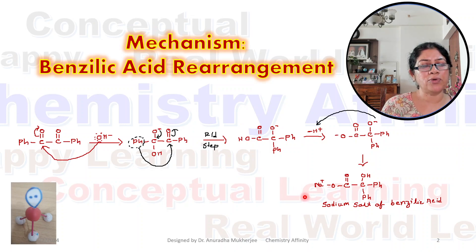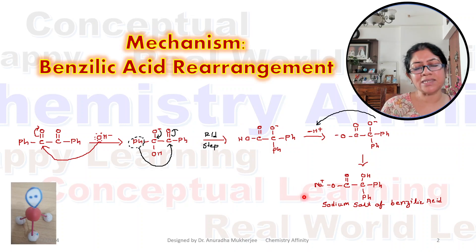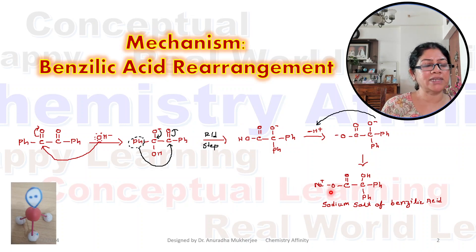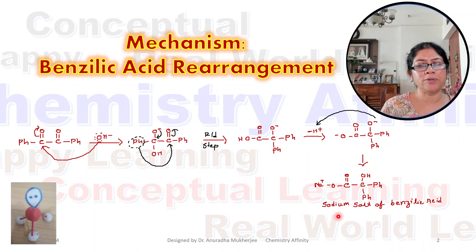Now if we add any acid here, such as sulfuric acid, this O⁻ becomes H, so we will be getting benzylic acid.